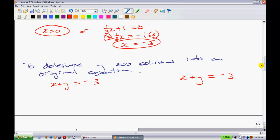The first solution that we found was x equals 0. When I substitute that in, I have 0 plus y equals negative 3. That tells me y equals negative 3. Therefore, one of my solutions, one of my ordered pairs where this crosses is at (0, negative 3).